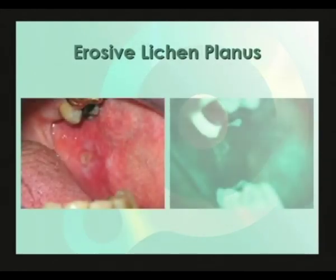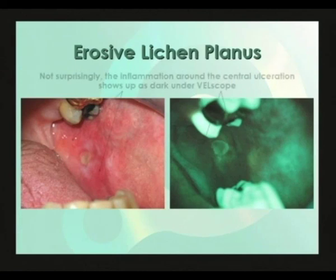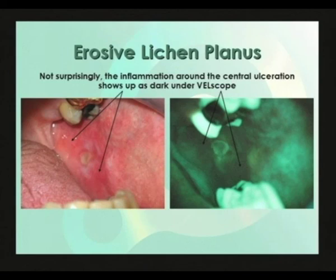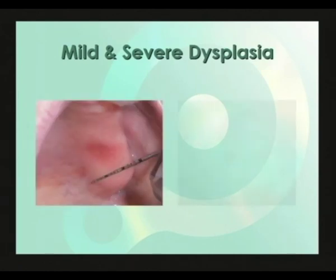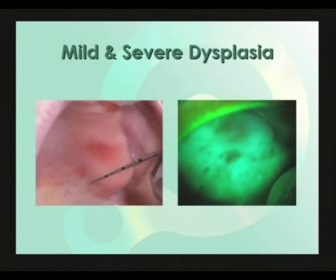This is an example of erosive lichen planus. Not surprisingly, the inflammation around the central ulceration shows up as dark under VELscope. Notice also that the keratinized tissue and central fibrin clot show up brighter compared to the surrounding inflammation.